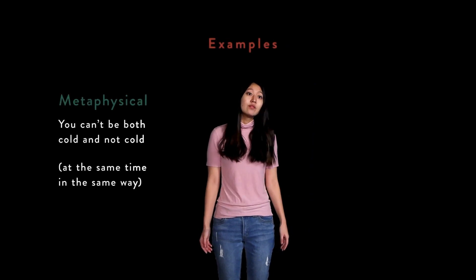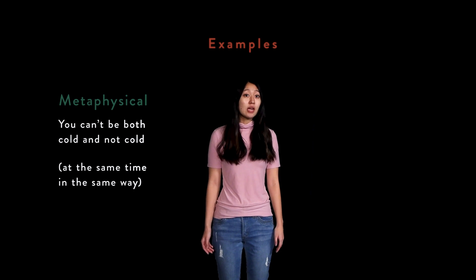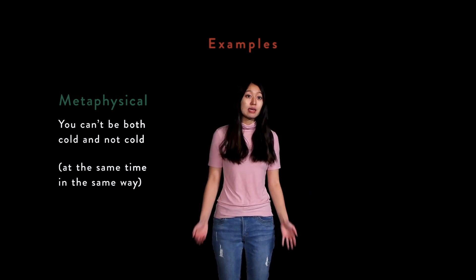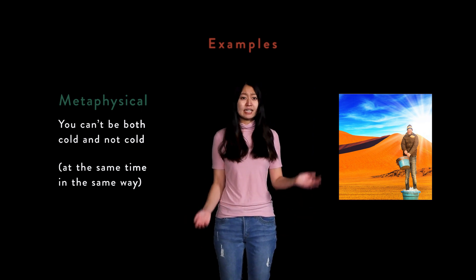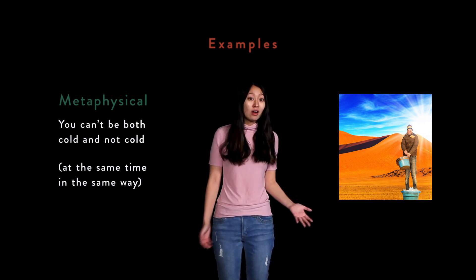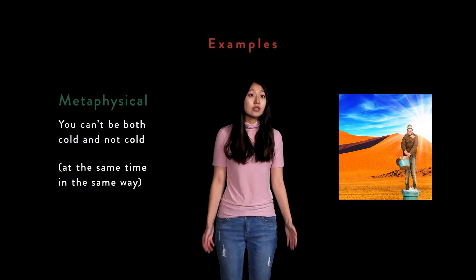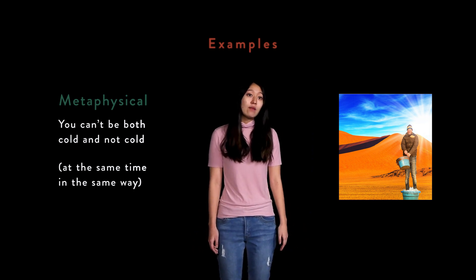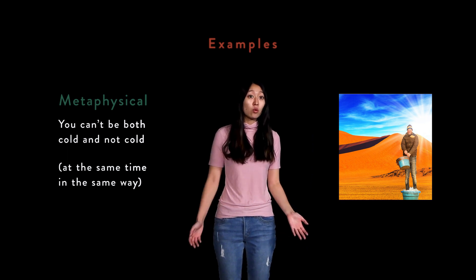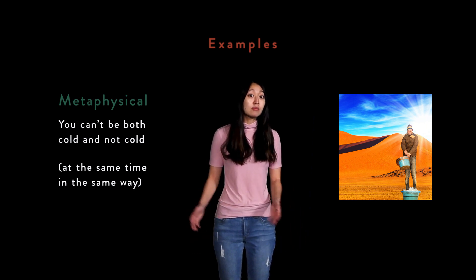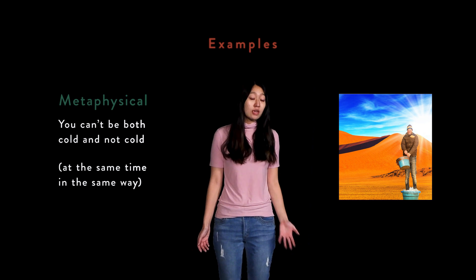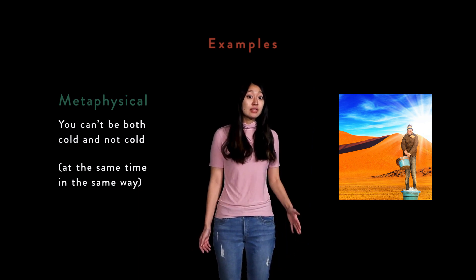Let's look at some examples for each version of the principle. Metaphysical: this version could be shown through the truism that one could not both claim to be cold and not cold in the same way at the same time. In response, someone could propose an example of an individual standing in a tub of ice on a hot summer's day so as to be hot and cold at the same time. While this is true, it is not in contrast with the principle of non-contradiction, because the person is not hot and cold in the same way — their feet are in the ice, so they would never claim their feet to be hot, just as their unsubmerged body would not be cold. Although this individual possesses both properties, they do not possess them in the same way.